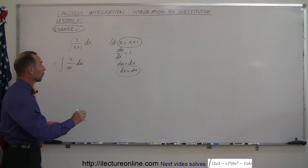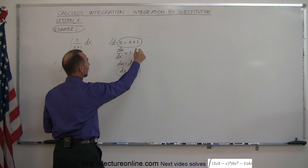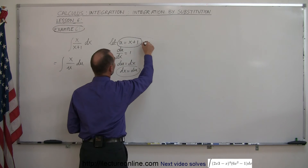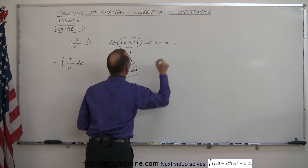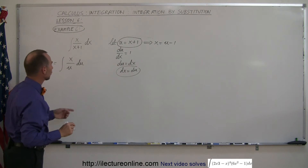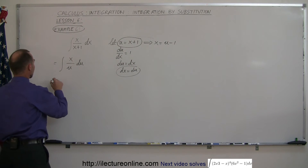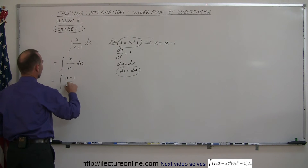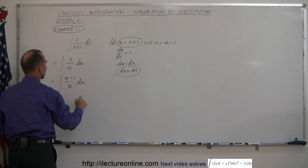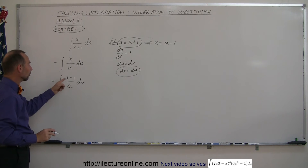The trick is to go back and say: if u is equal to x plus 1, this means that x is equal to u minus 1. So we substitute this x by u minus 1, and this can now be written as the integral of (u minus 1) over u times du.